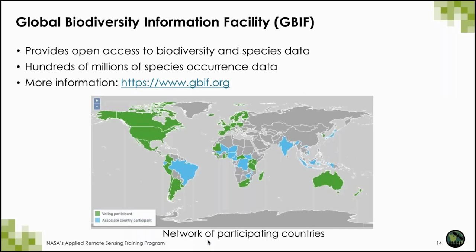The Global Biodiversity Information Facility allows anyone, anywhere to access data about all types of life on Earth. Those data are shared via its global platform, gbif.org, which also has national and thematic portals. This helps institutions publish data using common standards and operates through a network of nodes, facilitating international cooperation and collaboration.